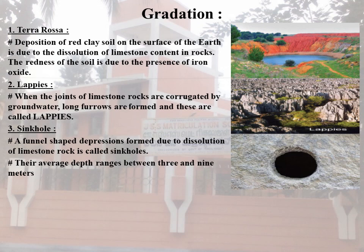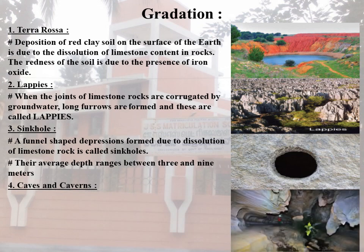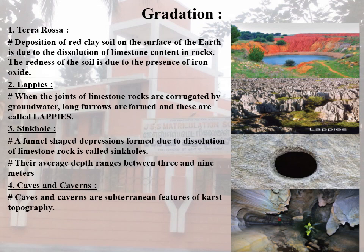There are as many as 15,000 sinkholes formed in 11 years. The next, fourth one, is Caves and Caverns. Caves and caverns are subterranean features of karst topography. Caves are hollow and are formed by the dissolution of limestone rock when carbon dioxide in air turns into carbonic acid after its reaction with water. Caverns are caves with irregular floors. For example, Guptapham caves in western Bihar.